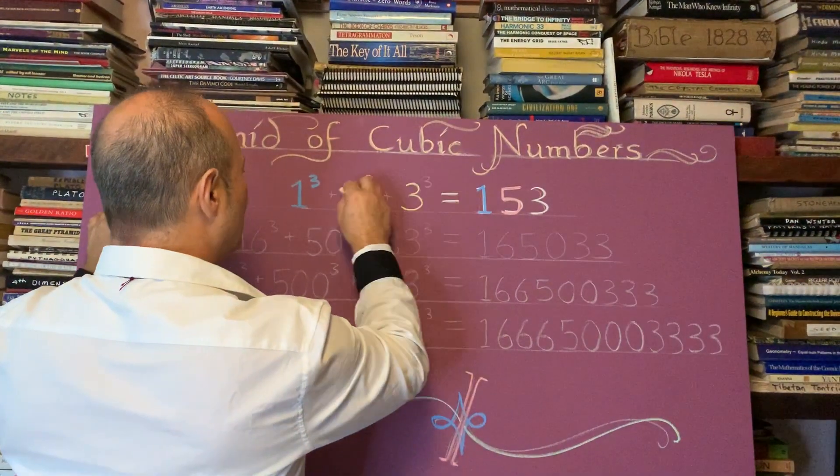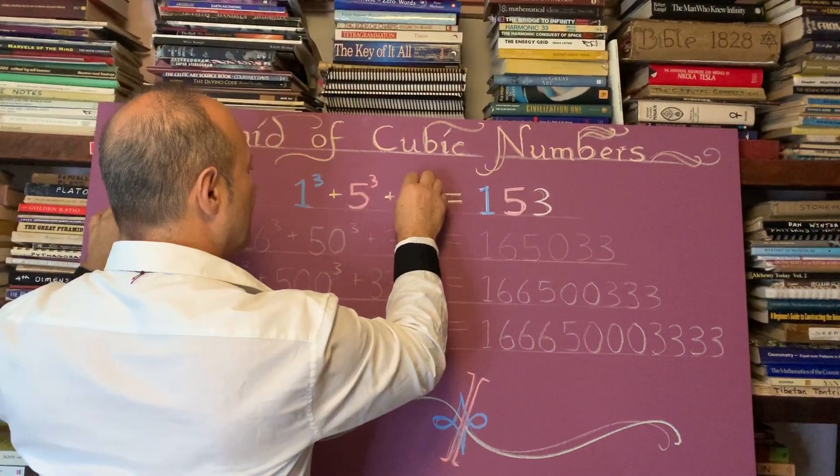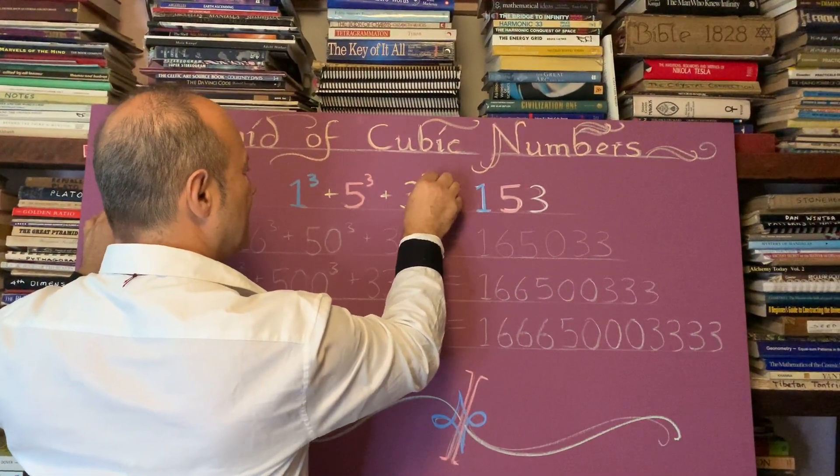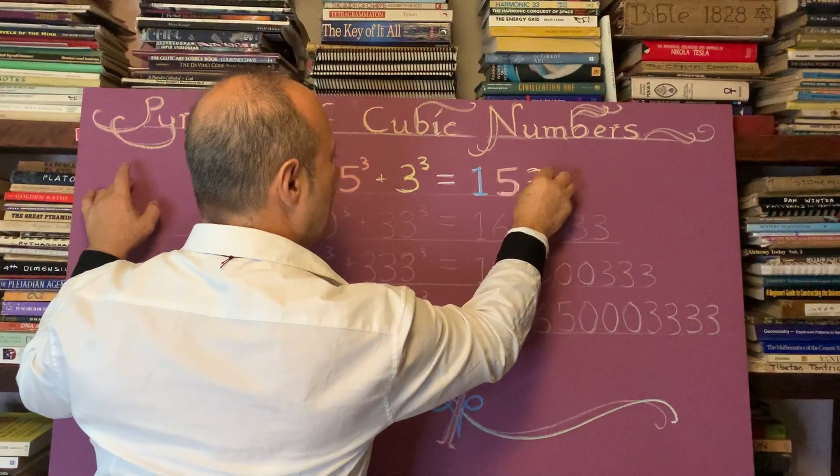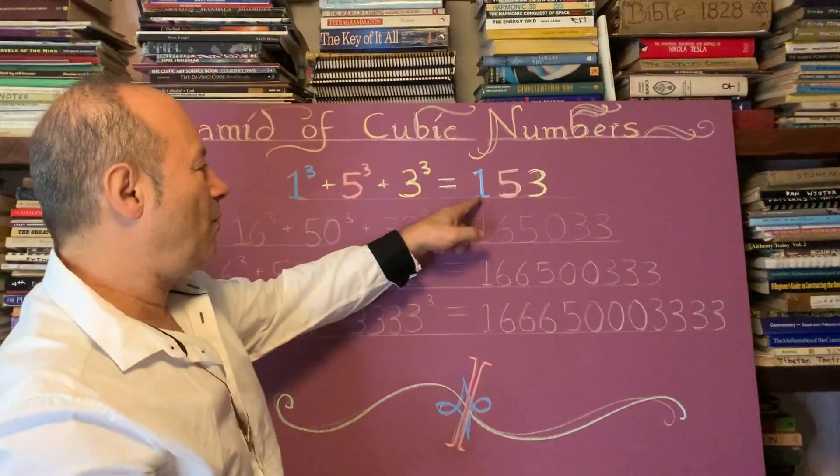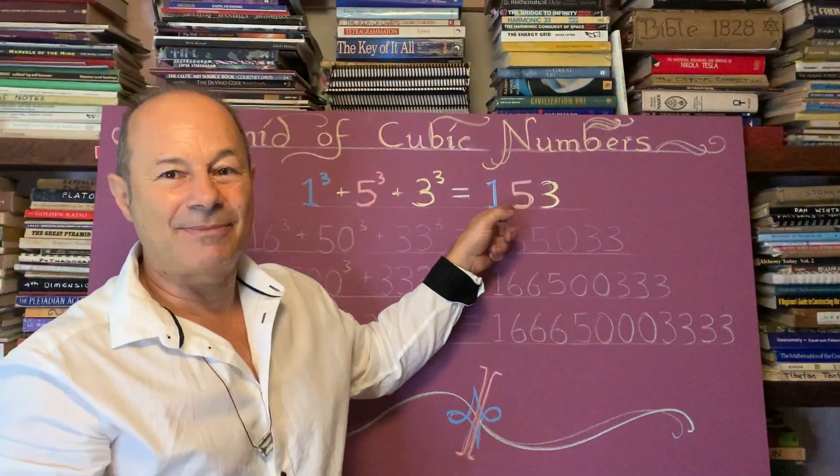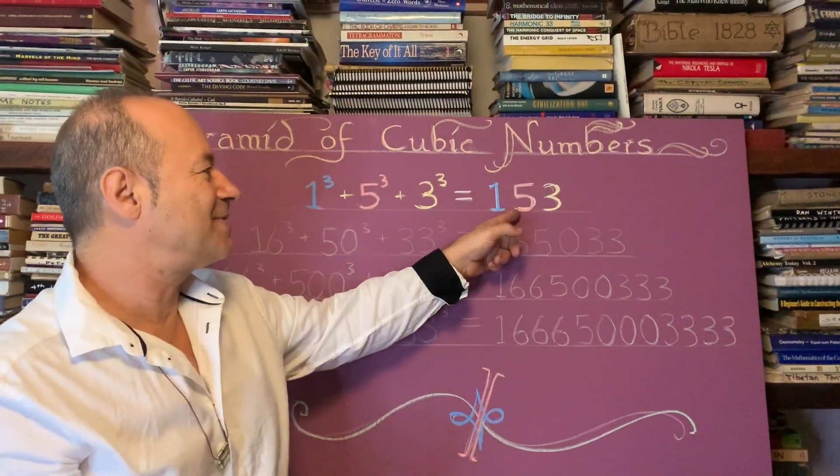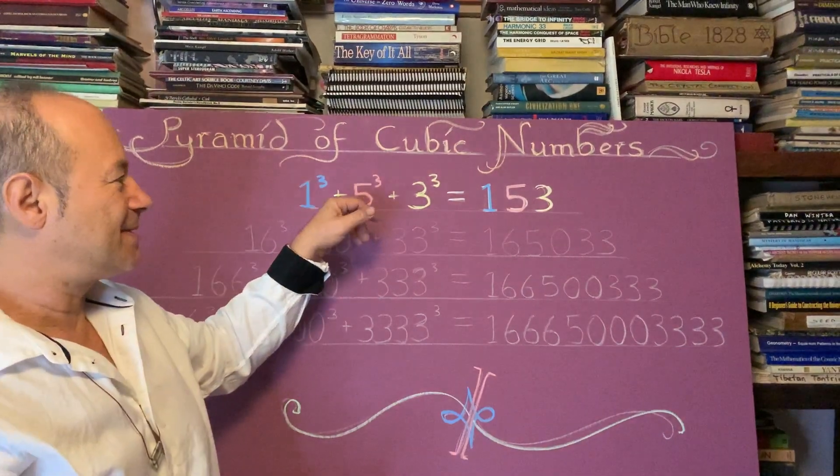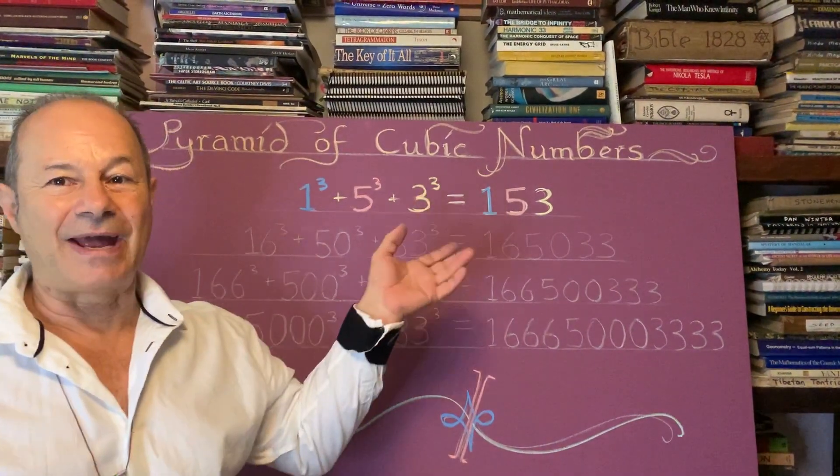And in yellow I'll do 3 cubed is 27. So if you were to add 1 plus 125 plus 27, you'll get the number 153. So it's interesting that its own digits, when they're cubed, gives that number.